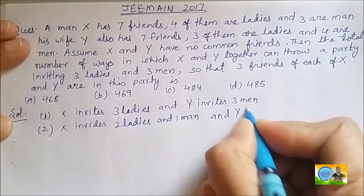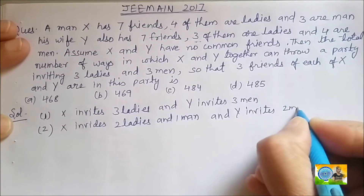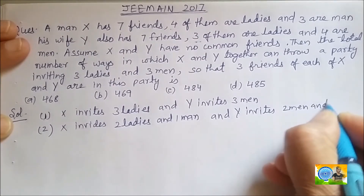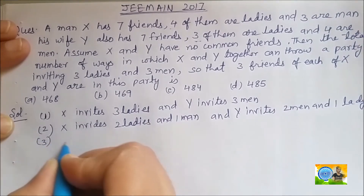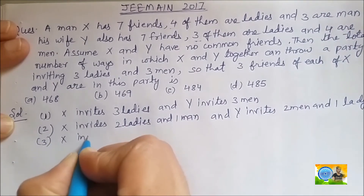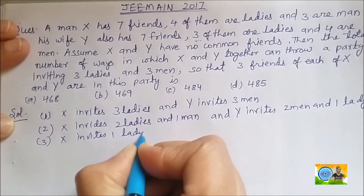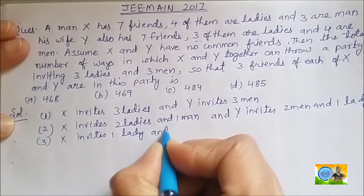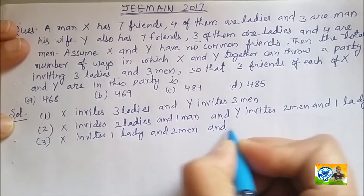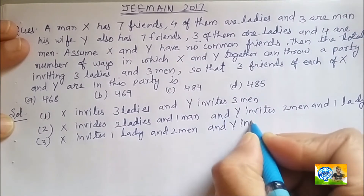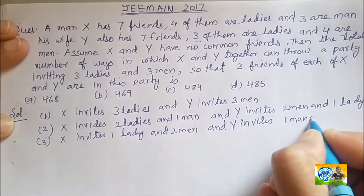Third case: X invites 1 lady and 2 men, and Y invites 2 ladies and 1 man. So Y invites 2 ladies and 2 men to balance.